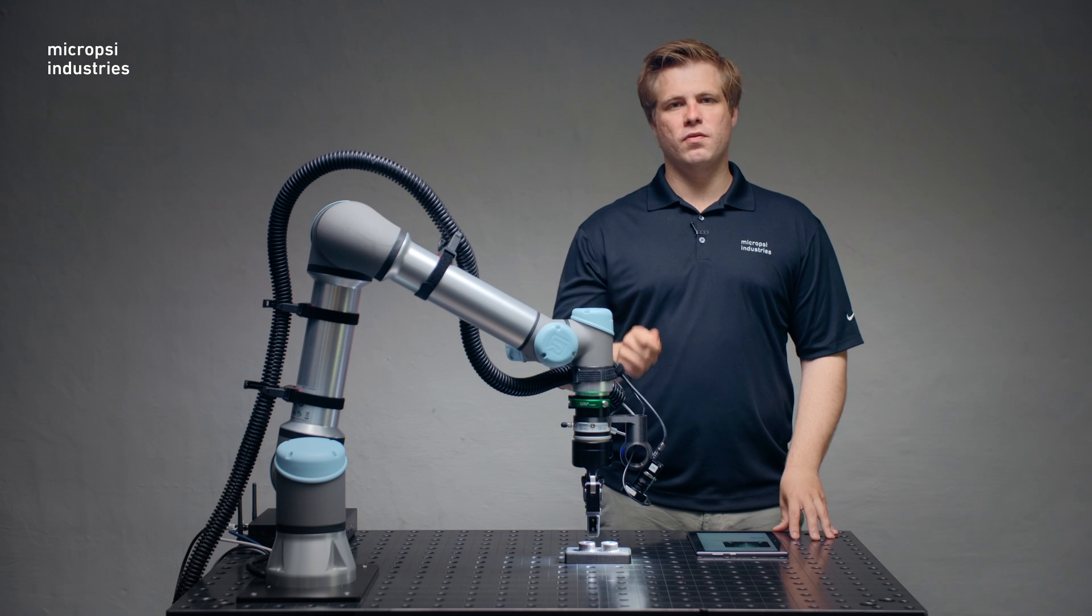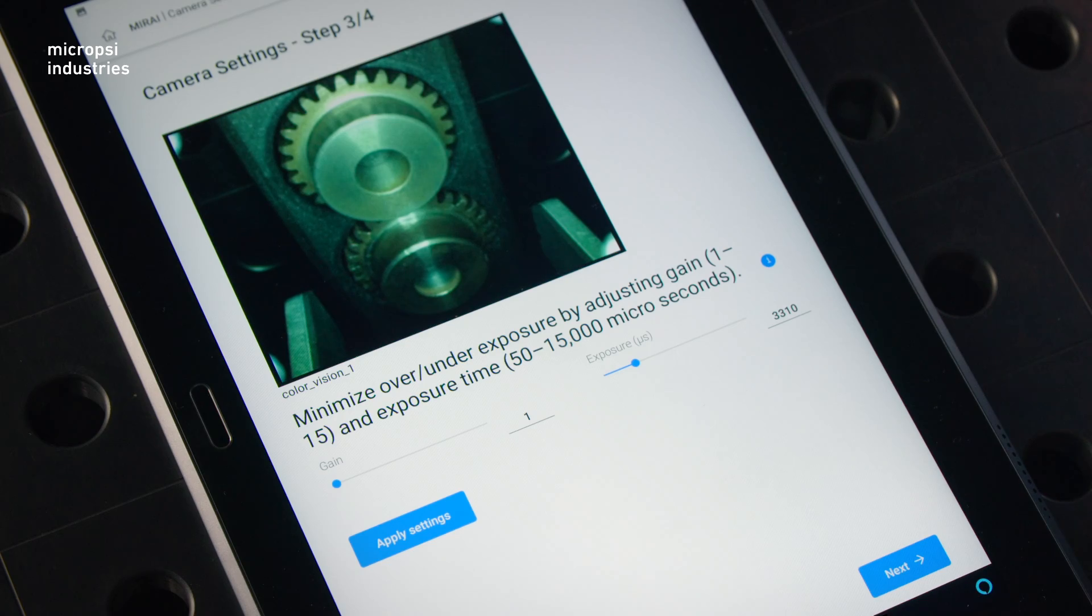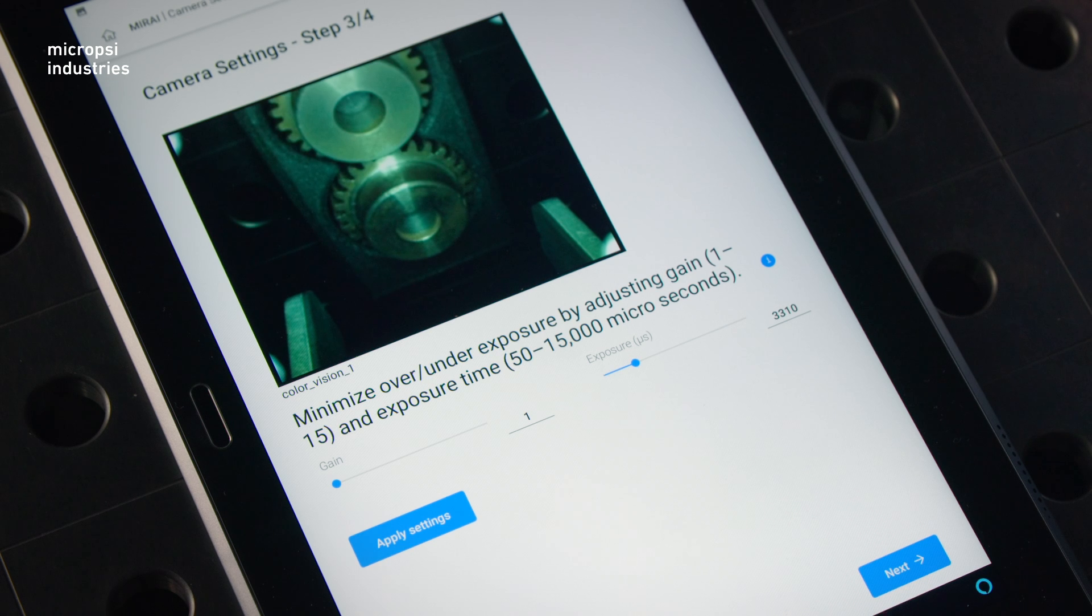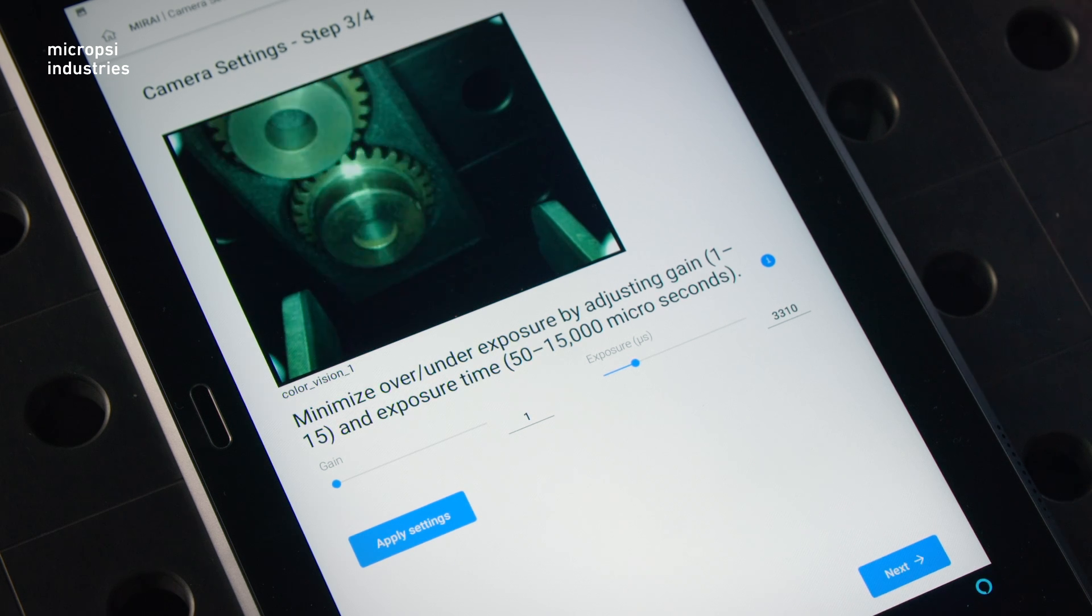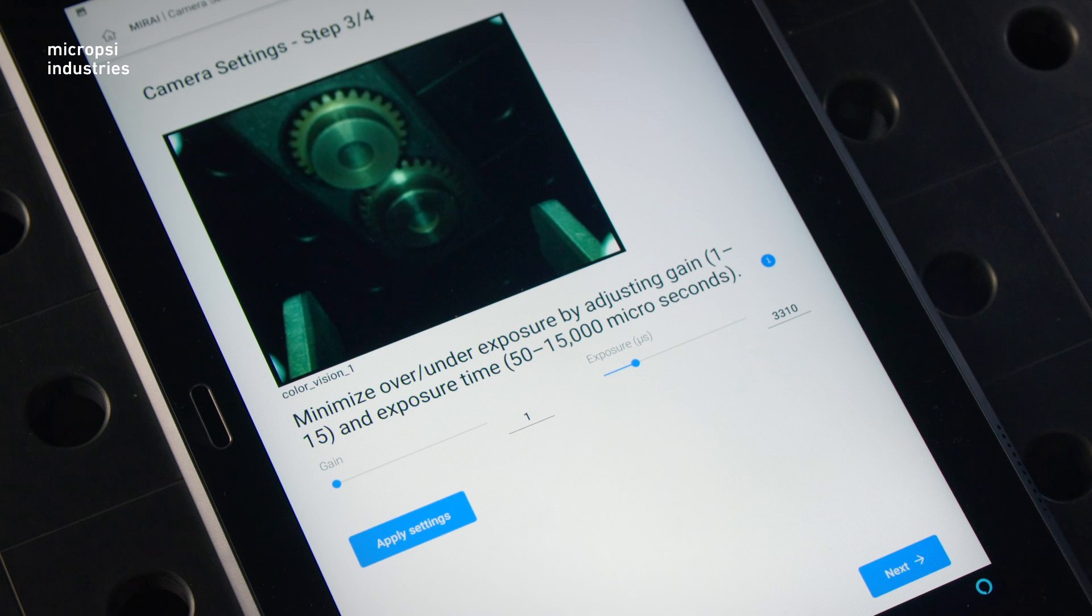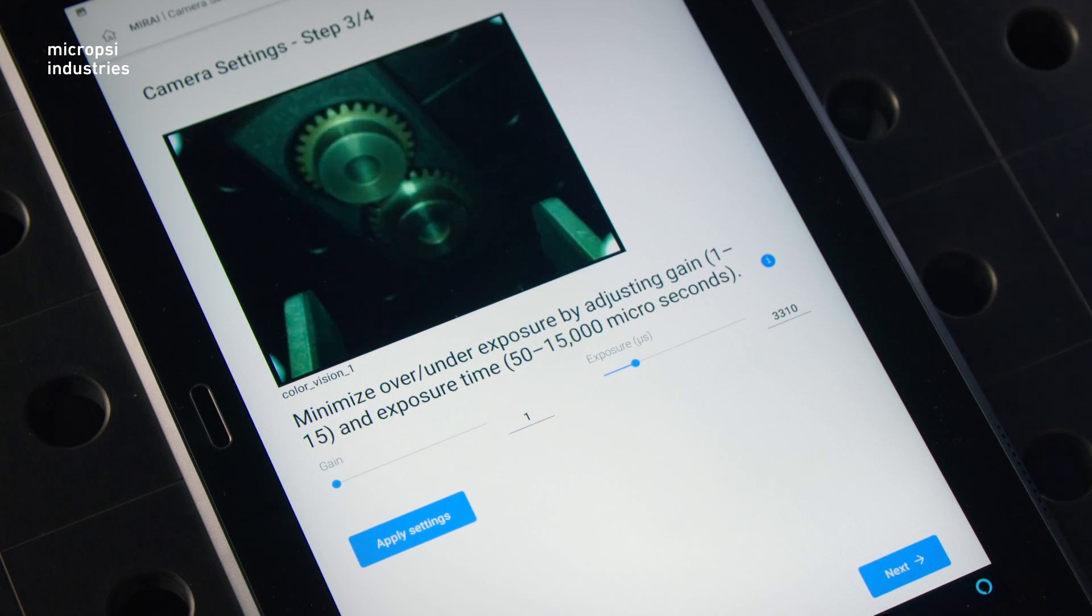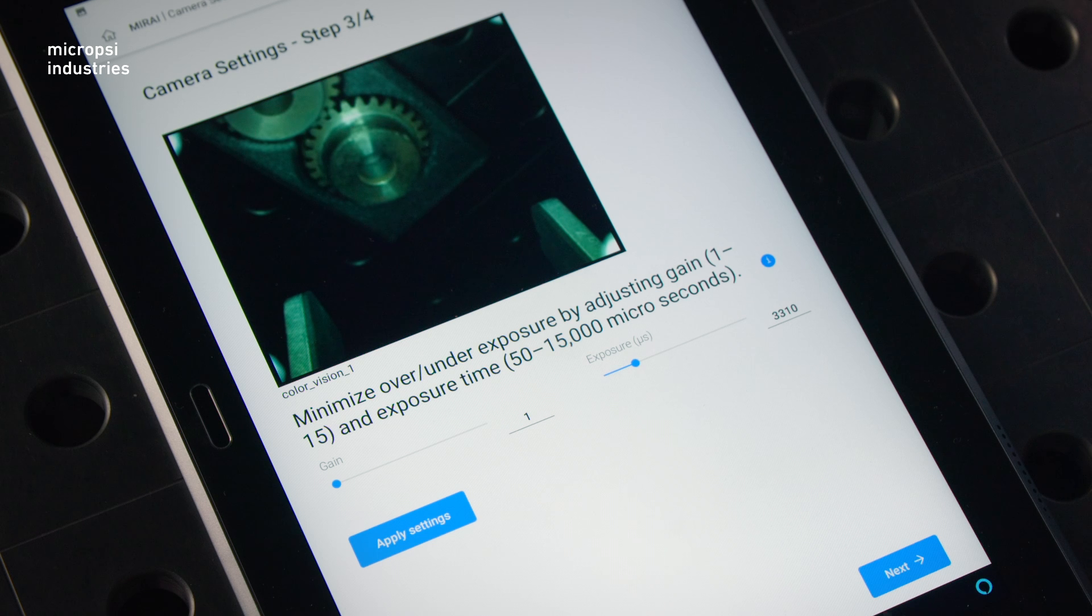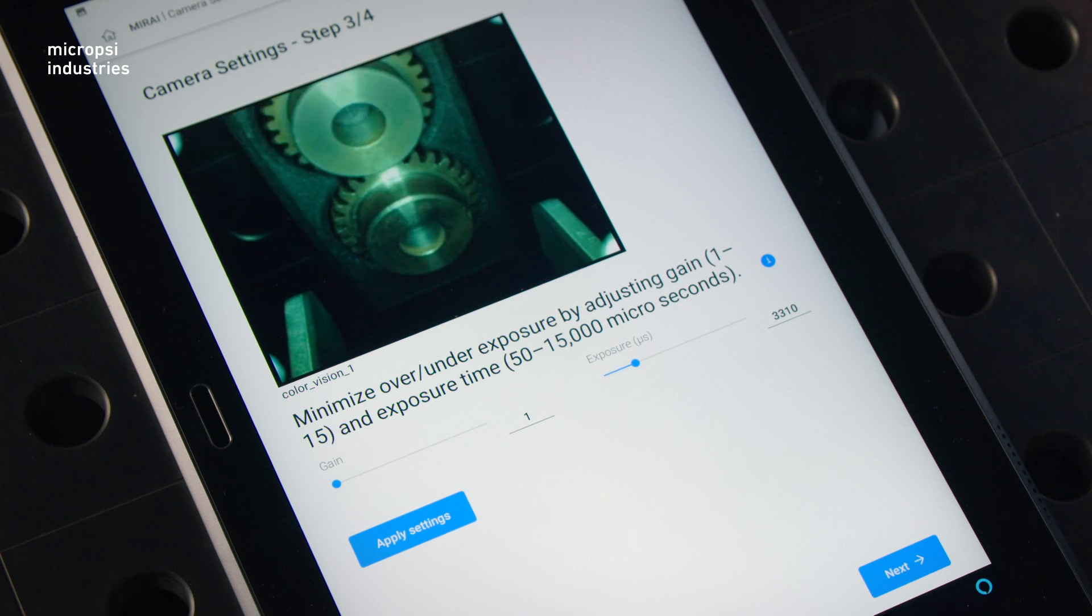This video, though, is about vision settings. Vision settings are the adjustments that you make to the live video stream here in the training app. Mirai sees the workspace through the camera. The video stream that comes from the camera is Mirai's only window to the world. It doesn't have other sources of information about its environment.